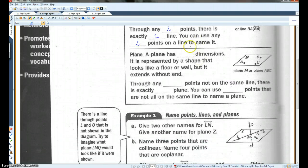A plane has two dimensions. It is represented by a shape that looks like a floor or a wall, but extends without end. This is kind of like what we said on the previous page. Through any three points, not on the same line, okay, so not collinear, there is exactly one plane. Any three points. You can use three points that are not on the same line to name that plane. We went over this before. So, in this plane, we could call this plane ABC or CBA, or we could just call it plane M.